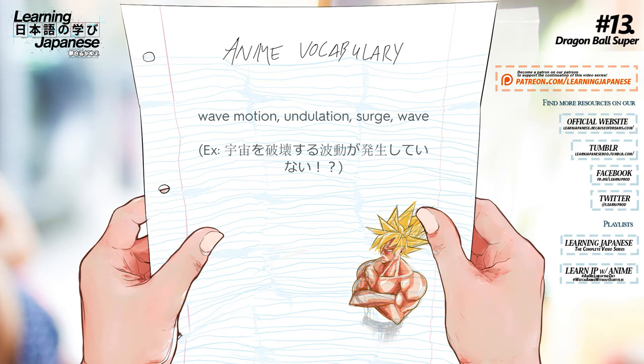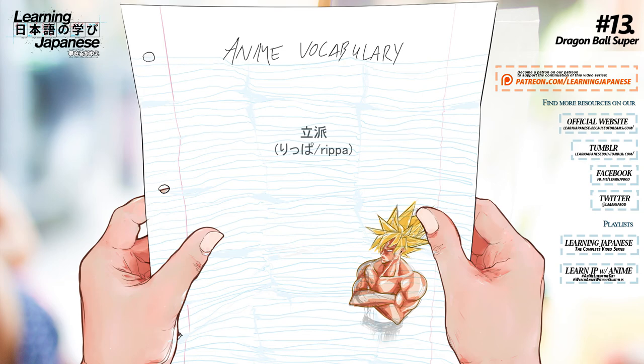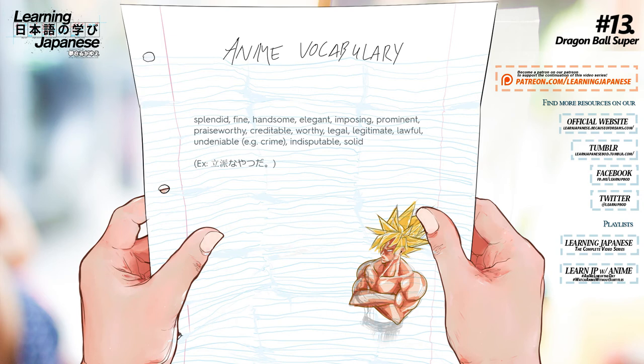本番 — Performance, take, going before an audience or on air, game, season, crucial moment. 立派 — Splendid, fine, handsome, elegant, imposing, prominent, praiseworthy, creditable, worthy, legal, legitimate, lawful, undeniable, indisputable, solid.